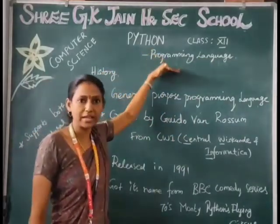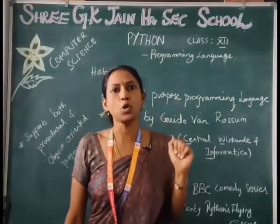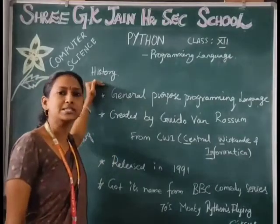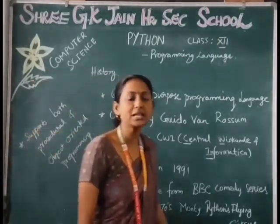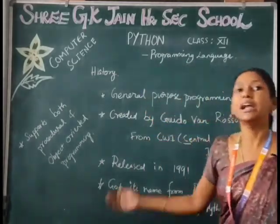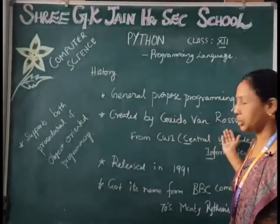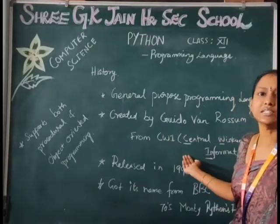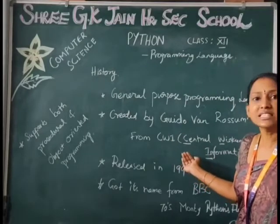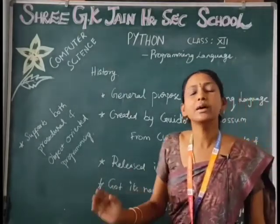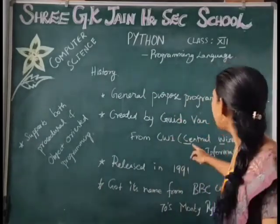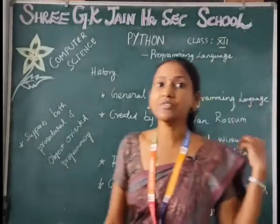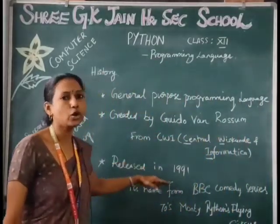Python is one of the programming languages. Today we are going to discuss the history of Python. Python is a general purpose programming language, created by Guido van Rossum, a professor from CWI. CWI is the National Research Institute in the Netherlands, for Mathematics and Computer Science. The language was released in the year 1991.